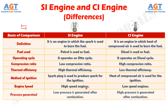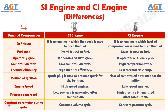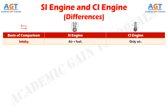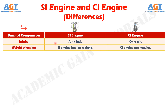In terms of pressure generated, SI engine produces low pressure after combustion whereas CI engine produces high pressure. In terms of constant parameter during the cycle, SI engine has a constant volume cycle whereas CI engine has a constant pressure cycle. In terms of intake, SI engine takes a mixture of air and fuel as intake, whereas CI engine takes only air as intake. In terms of engine weight, SI engine is lighter whereas CI engines are heavier.